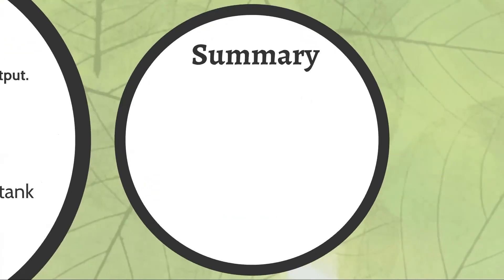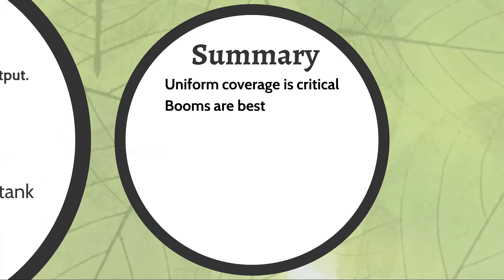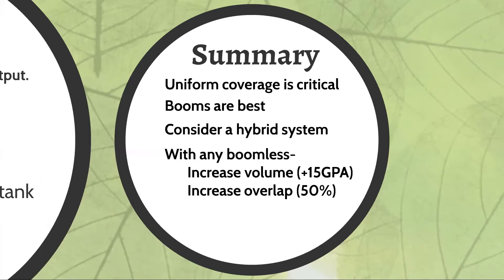In summary: uniform coverage is critical for any application. The best way to achieve it is always going to be a boom — you'll never find a system as good. But you can get close with hybrid systems. If you're going to use any boomless sprayer, increasing volume by 5, 10, or 15 gallons per acre and increasing your overlap can help. Regardless of what system you have, you need to be confident in how much you're putting out so you're calibrated accurately. Contact your local county extension agent if you need assistance or a refresher with your specific equipment.